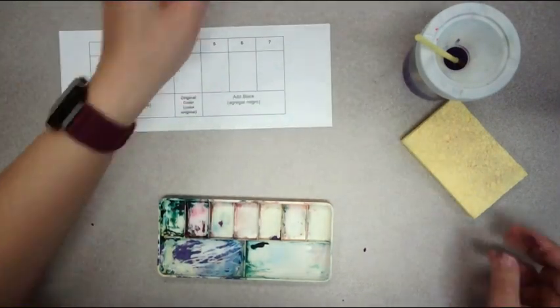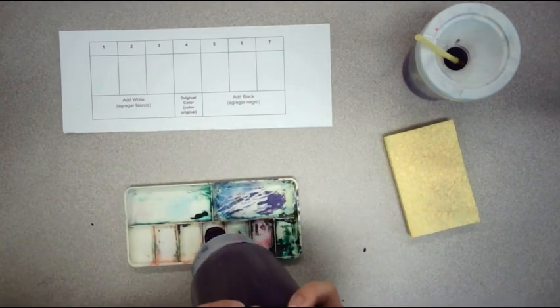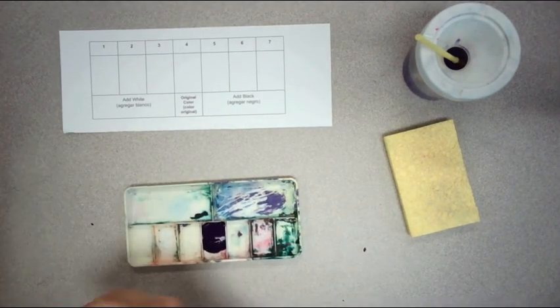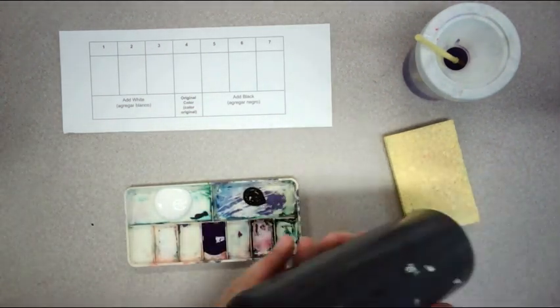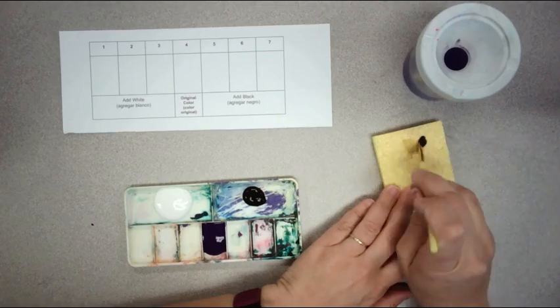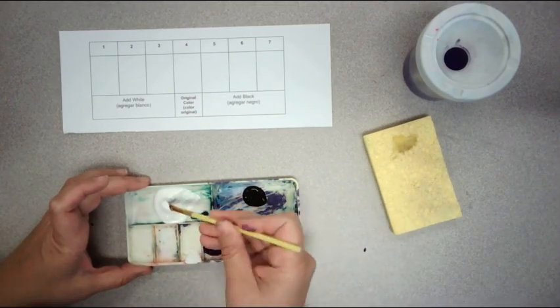All right, so we're making a value scale. I'm using purple; you can use whatever color you want. Start with the base color right there in the middle, and then you're going to add a lot of white and some black—not as much black. We need a lot more white than we need black.